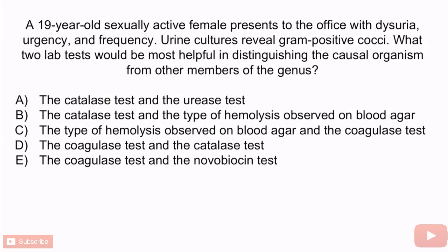From the question stem, hopefully you notice that this girl is presenting with dysuria, urgency, and frequency, which is consistent with a UTI. The fact that she's young, sexually active, and urine cultures have revealed gram-positive cocci all suggest a diagnosis of Staphylococcus saprophyticus. We're asked about the two lab tests that can help us distinguish this organism from the other members of this genus: Staph aureus and Staph epidermidis. The correct answer is E, the coagulase test and the novobiocin test.